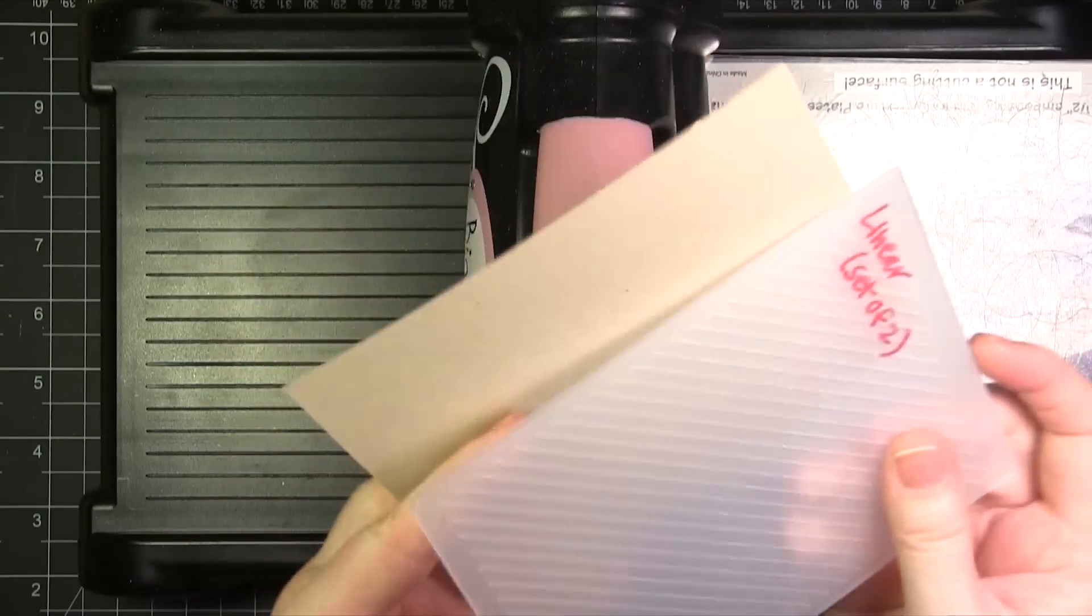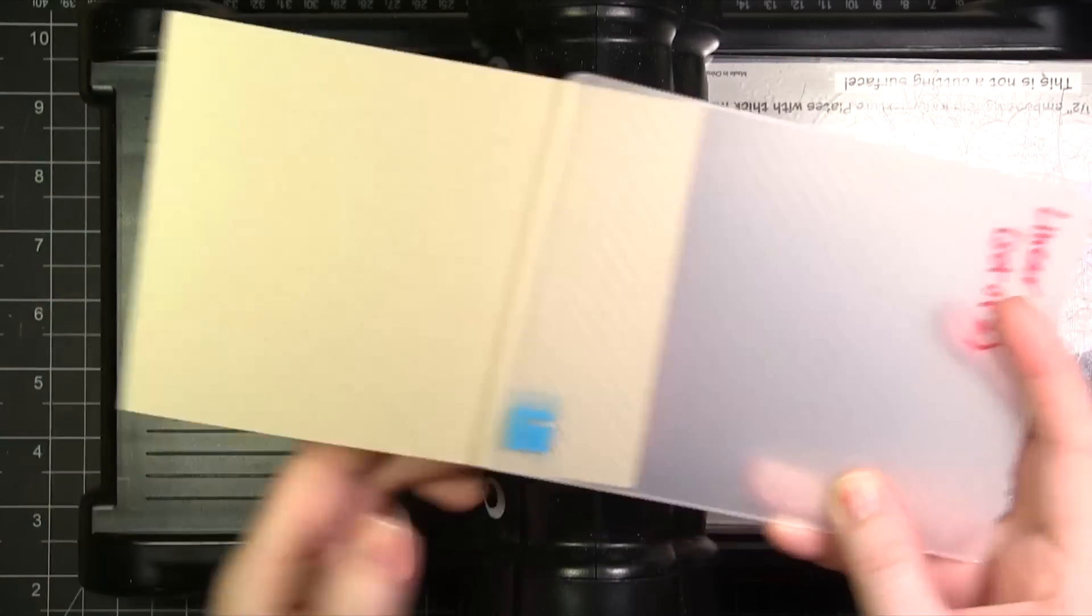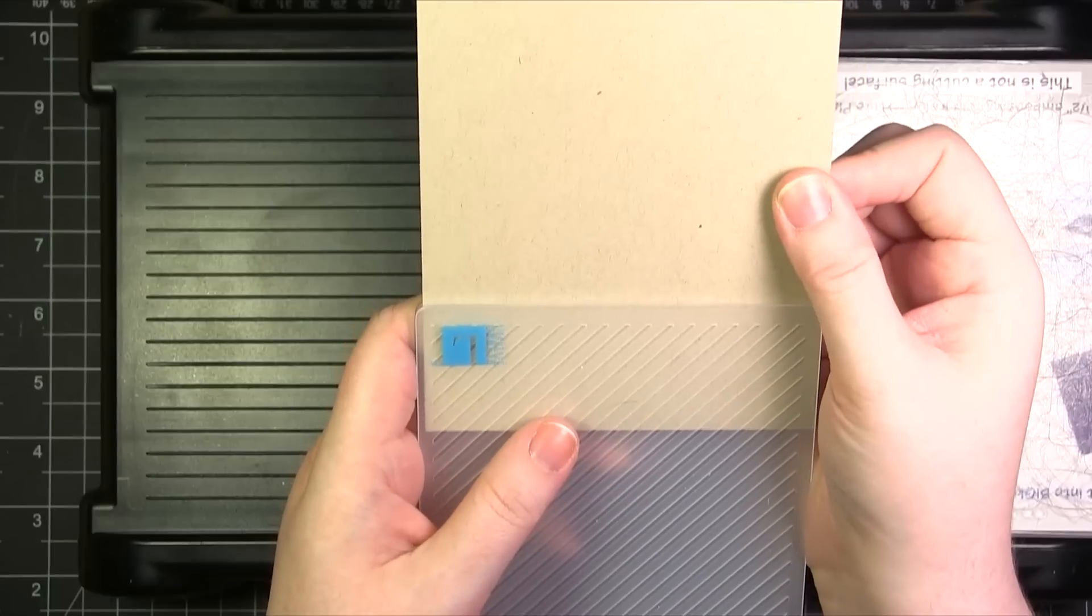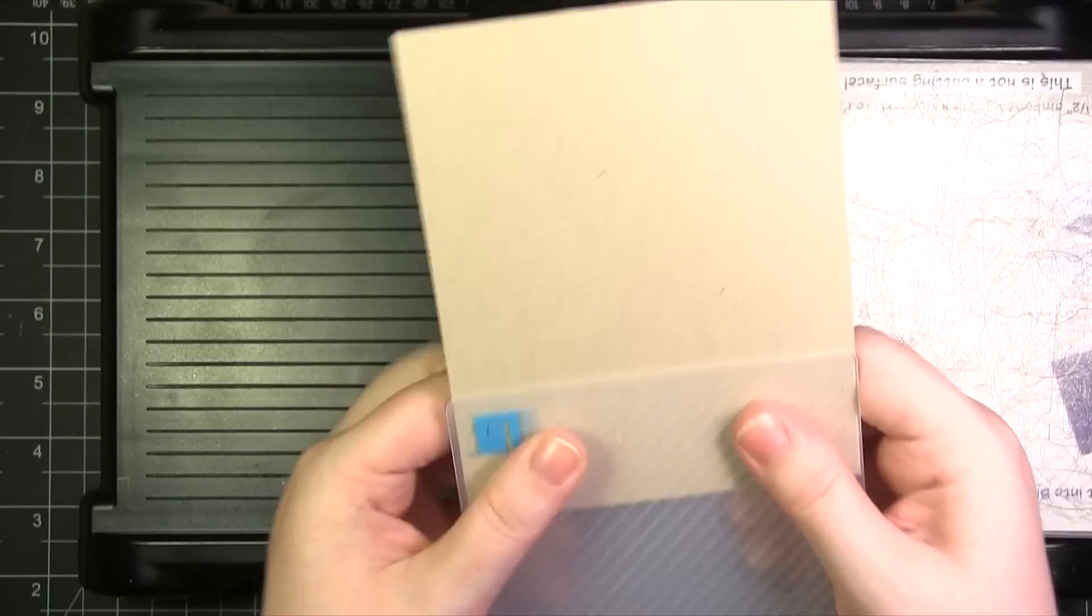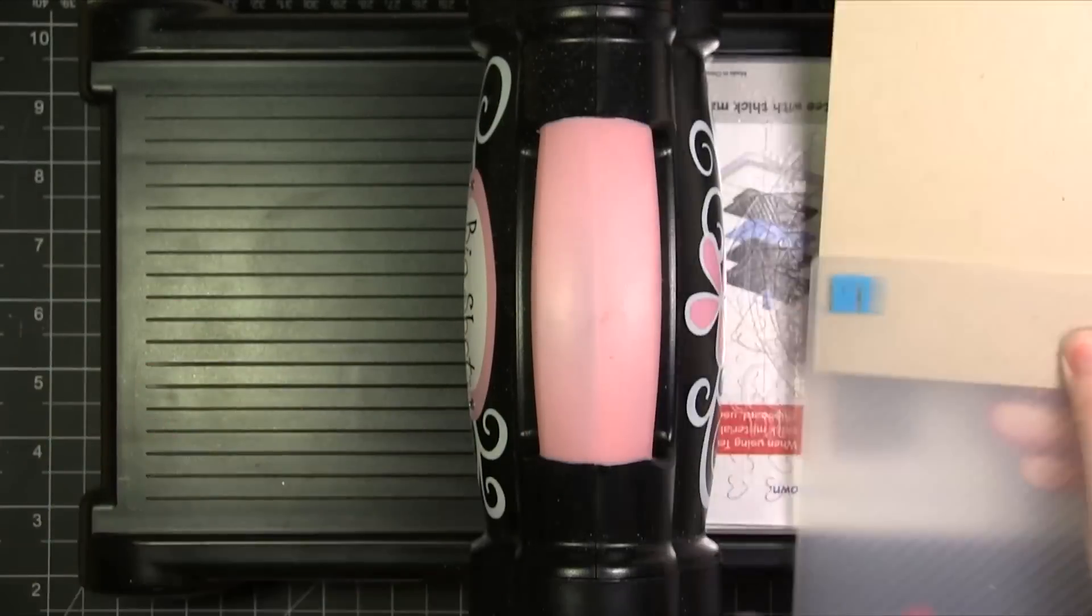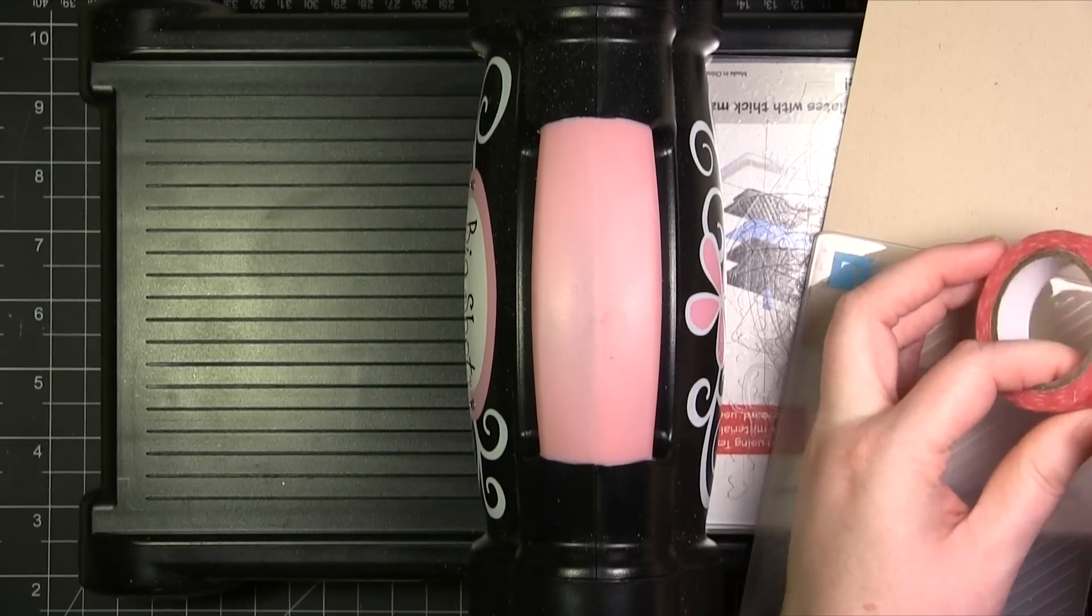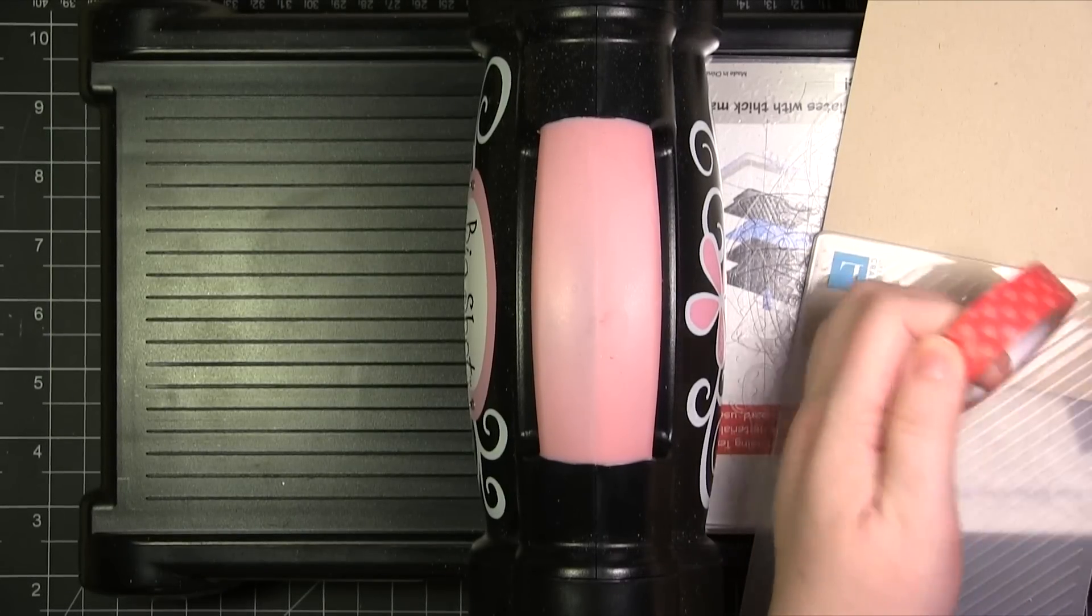I'm only going to emboss this little top portion. I'll just stick it in here like this. I'm going to hold this with a little bit of washi tape. I have a ton of washi tape and just using a little tiny one inch strip isn't going to harm my stash at all.